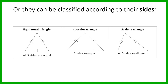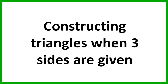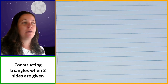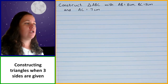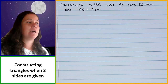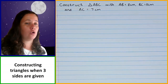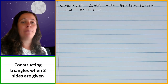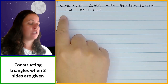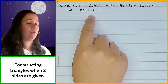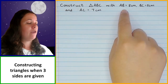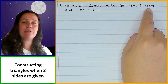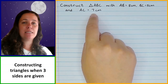Now let's take a look at some constructions that we're going to be doing. The first type of construction is where we have to construct a triangle where three sides have been given — you have been told the lengths of three sides and you have to construct a triangle using those three lengths. So in this example, we have to construct triangle ABC where AB must be eight centimeters, BC must be five centimeters, and AC must be seven centimeters.